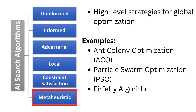When the search space is vast and complex, meta-heuristics steps in. They balance exploration and exploitation to find near-optimal solutions. Examples include ant colony optimization, particle swarm optimization, and the firefly algorithm.